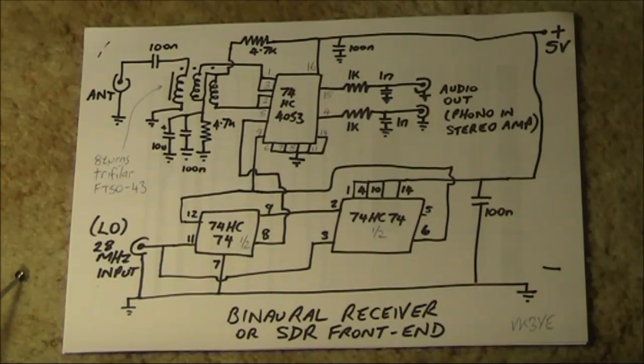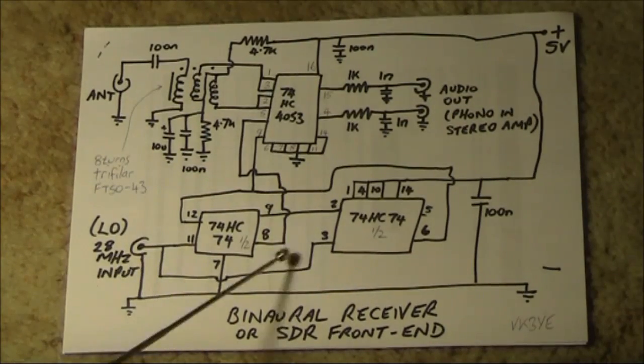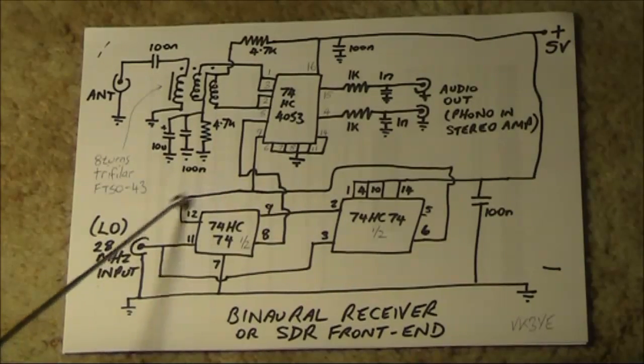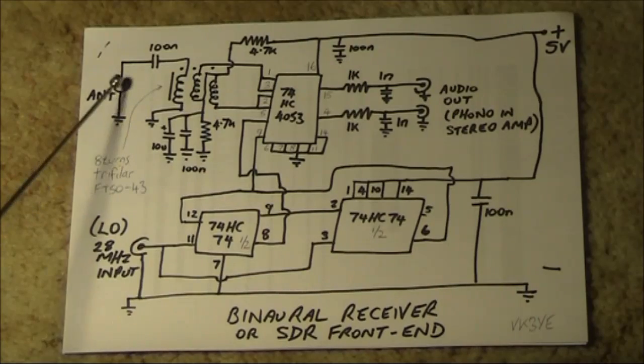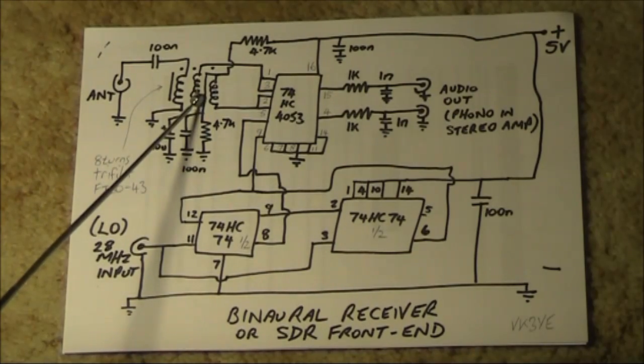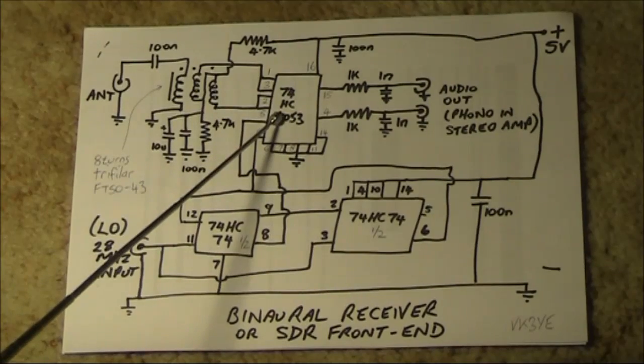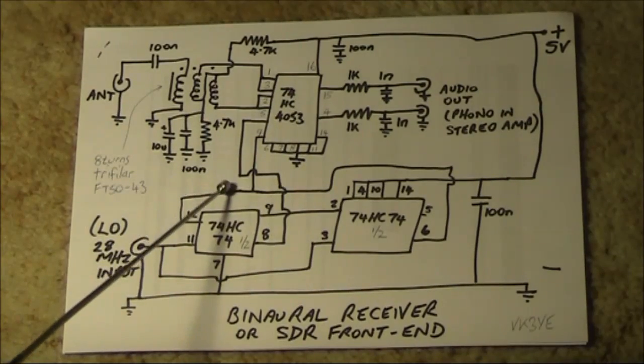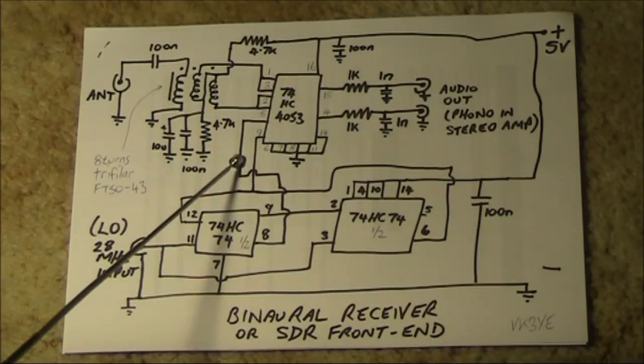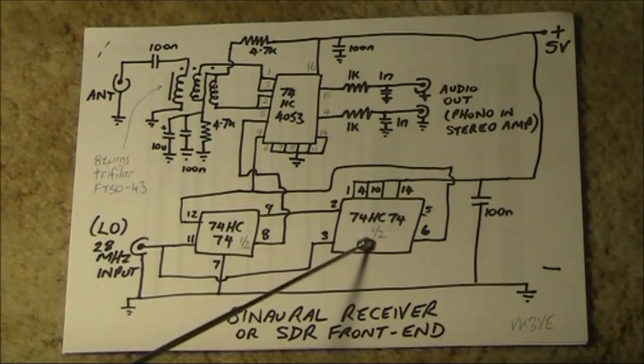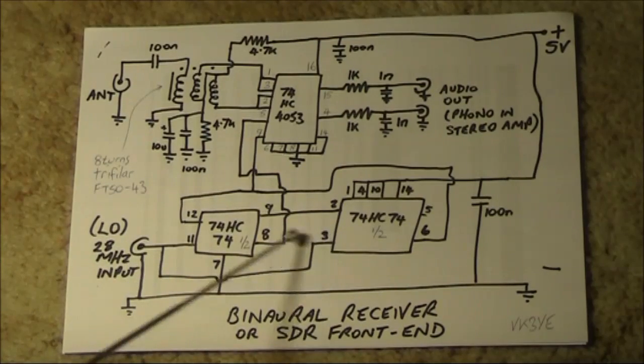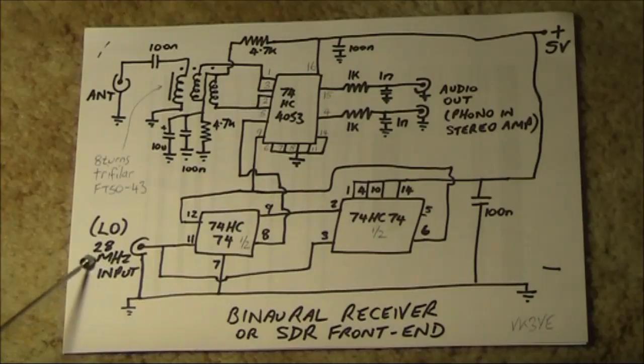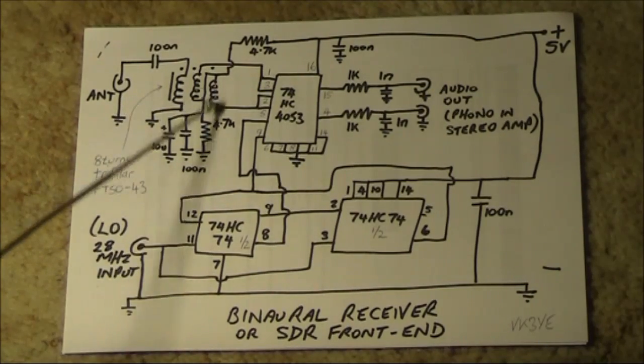Here's the circuit for the receiver. Very simple, just two ICs and a handful of other components. It would only cost a few dollars to build. The incoming signal at 7 megahertz comes through this broadband ferrite transformer into the 4053, and that's mixed with two signals at 7 megahertz, coming via the 74HC74s. They are also divided by four, so you actually need 28 megahertz coming in from the DDS to receive a 7 megahertz signal.